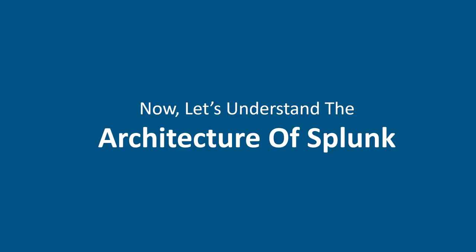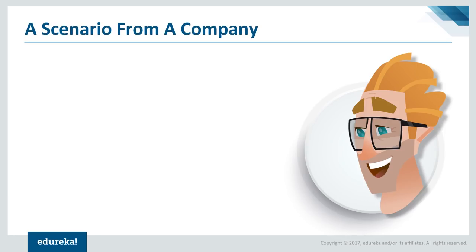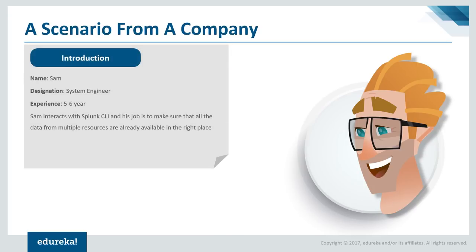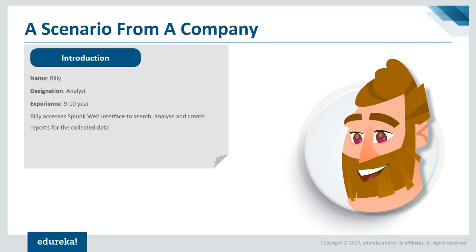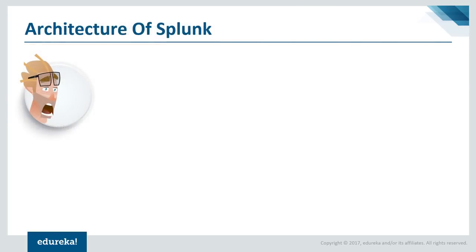We have covered the first half of our agenda and discussed Splunk's components. Now let's understand the architecture of Splunk and learn how things work inside Splunk's engine. We have Sam, who is a system engineer with 5 to 6 years of experience. Sam interacts with the Splunk CLI and his job is to make sure that all the data coming from multiple resources is available in the right place. Meanwhile, Sam is busy collecting inputs from multiple ends — getting logs from different network ports or via running scripts, and keeping track of any changes made to files.